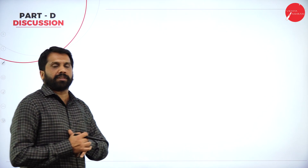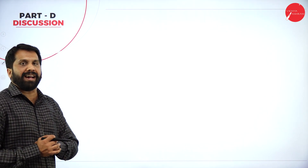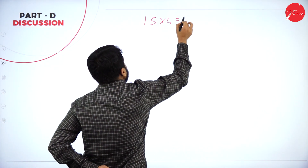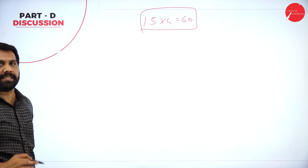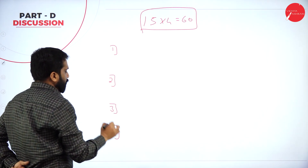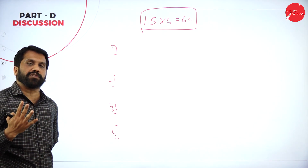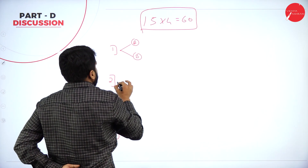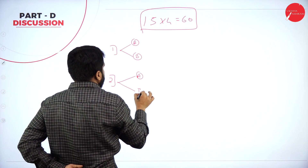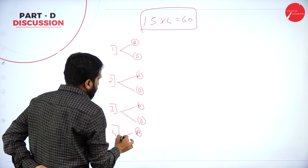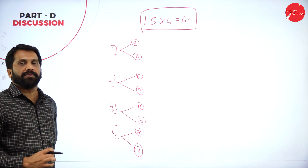Now let's discuss the 15-mark question paper pattern in detail. There are 4 questions, all compulsory. Each question has an option A and option B. You need to attempt one out of every A-B pair — one from Question 1, one from Question 2, one from Question 3, and one from Question 4.